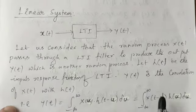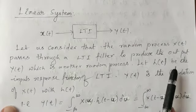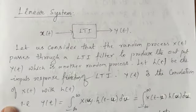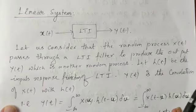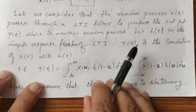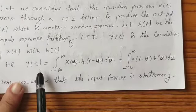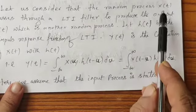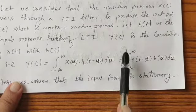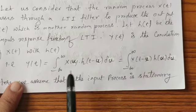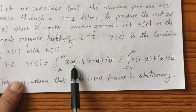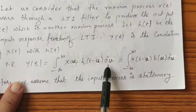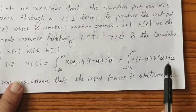If you transform that wide sense stationary process through this system, you will find the random process Y of t, which is the convolution of the random process X of t with H of t — the impulse response function — given by the integral from minus infinity to plus infinity of X(U) · H(t minus U) dU, or equivalently X(t minus U).